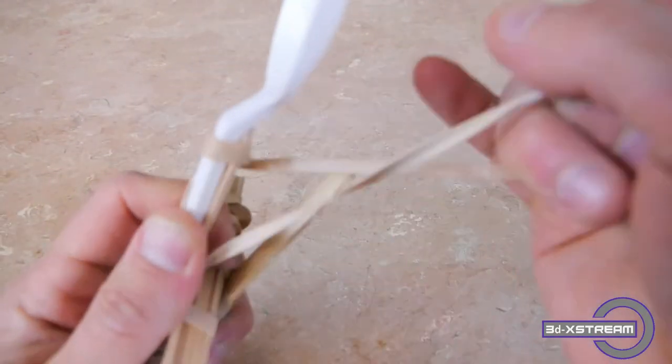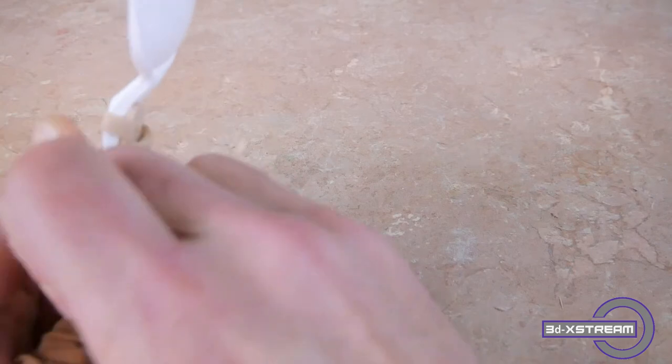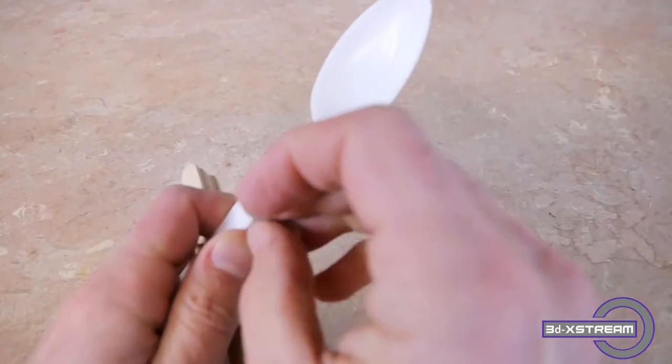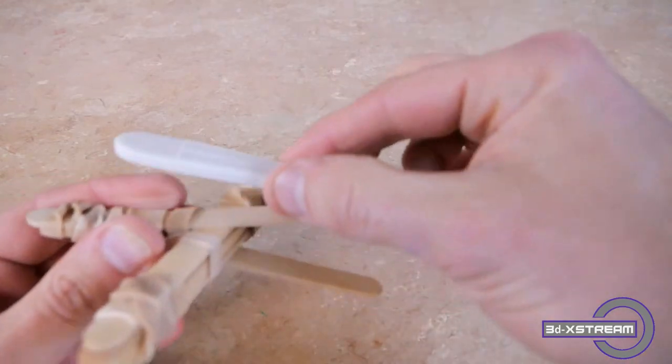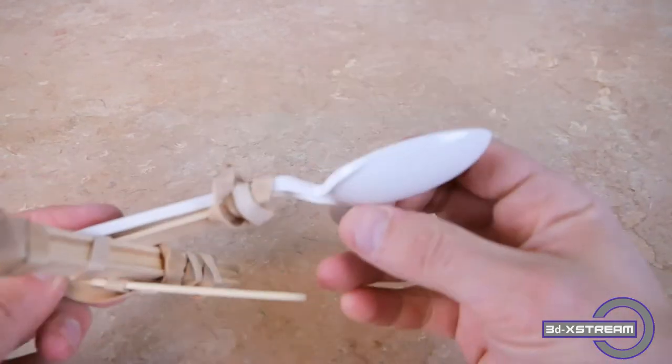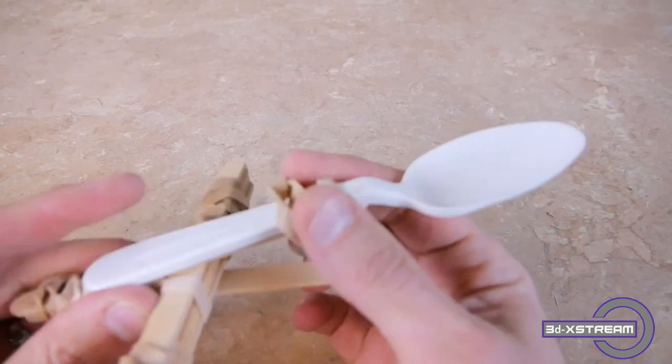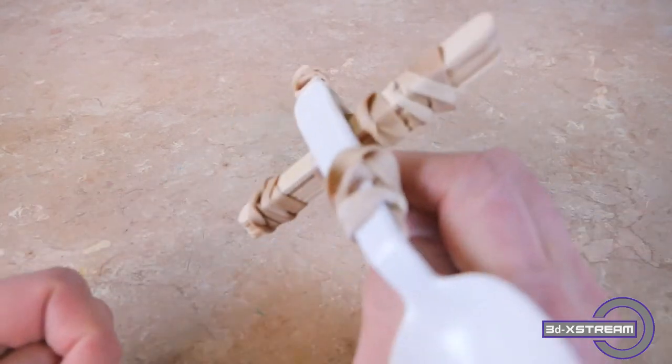There is no trick to this, no magic way. You just have to get this rubber band sealed as much as possible around the spoon. Make sure it doesn't come apart on you, so you can slide it down. It doesn't have to be super tight as long as you can get this rubber band on the spoon.